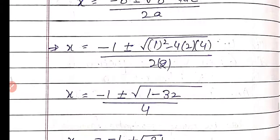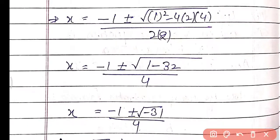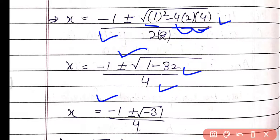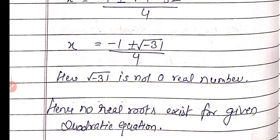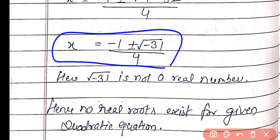Putting all the values: x = (−1 ± √(1² − 4 × 2 × 4)) / (2 × 2) = (−1 ± √(1 − 32)) / 4 = (−1 ± √(−31)) / 4. Now √(−31) is not a real number. So we can say no real roots exist for the given quadratic equation.